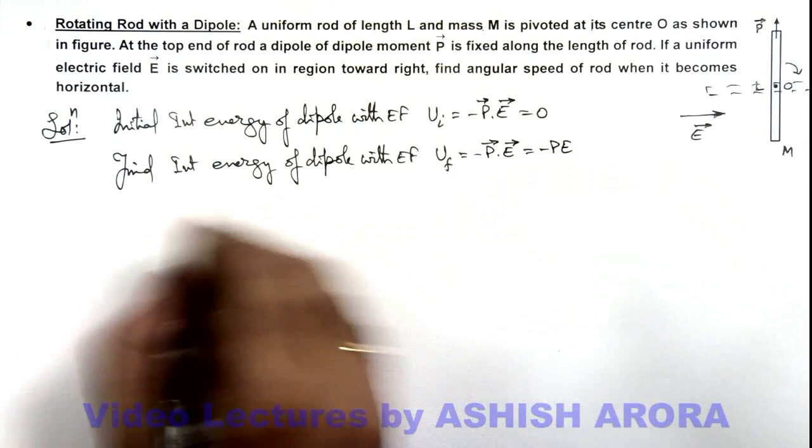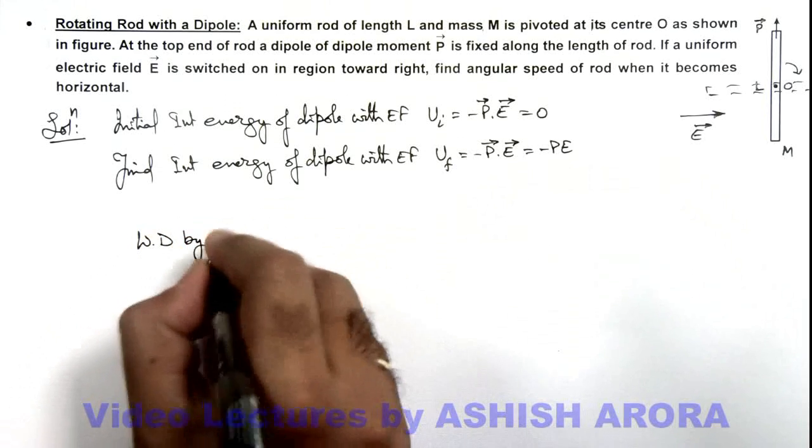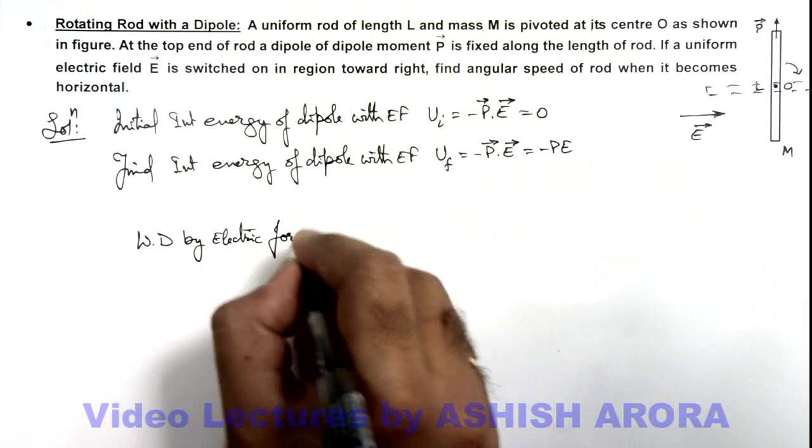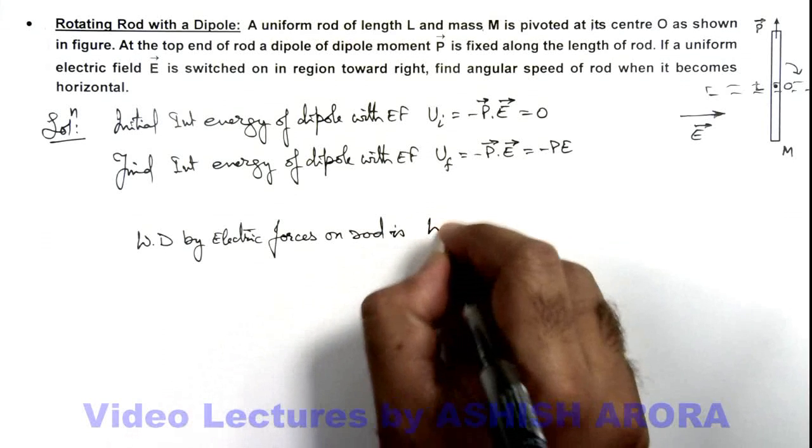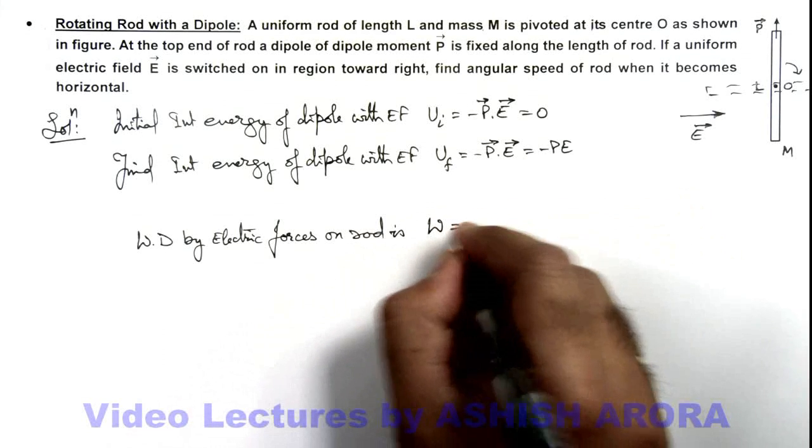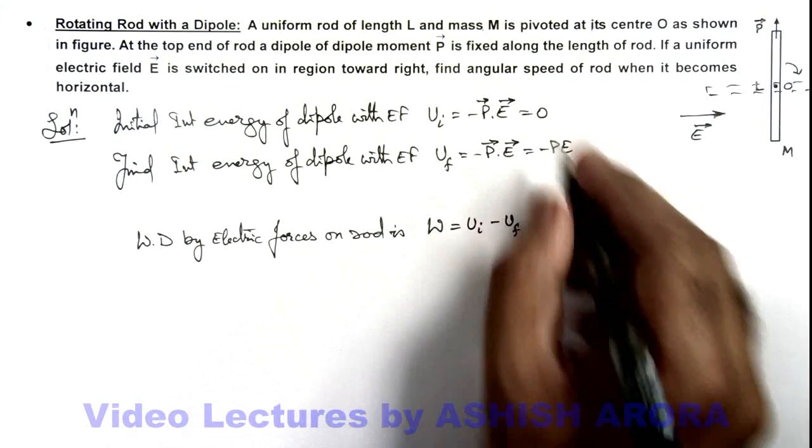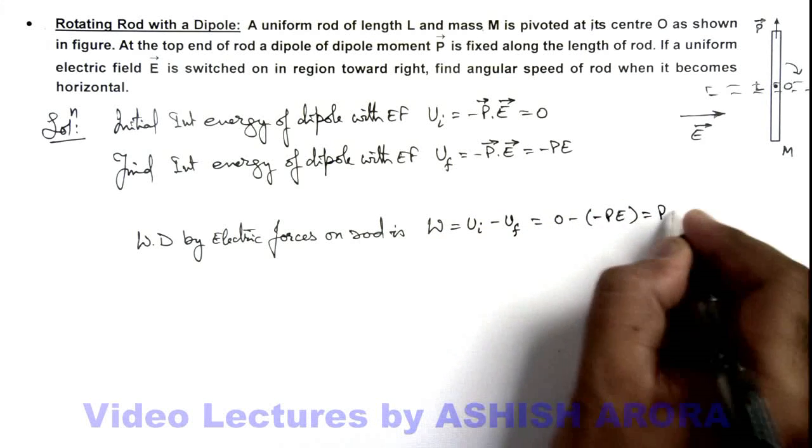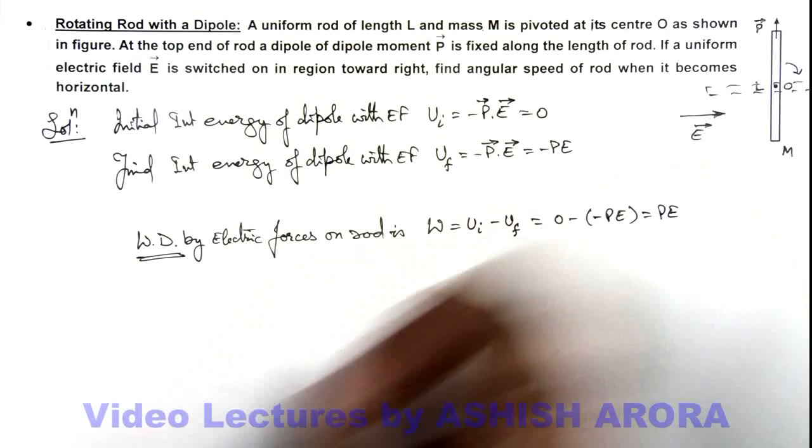Here we can write work done by electric forces on rod. This is the work done by electric force, so this we can write as initial energy minus final energy, which is zero minus of minus PE, that is equal to PE. And this is the work done which is supplying kinetic energy to the rod.